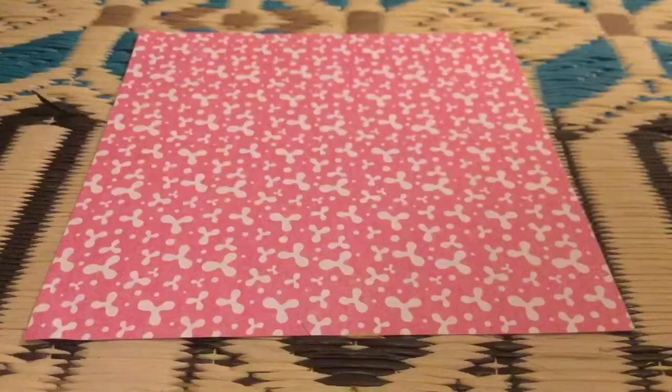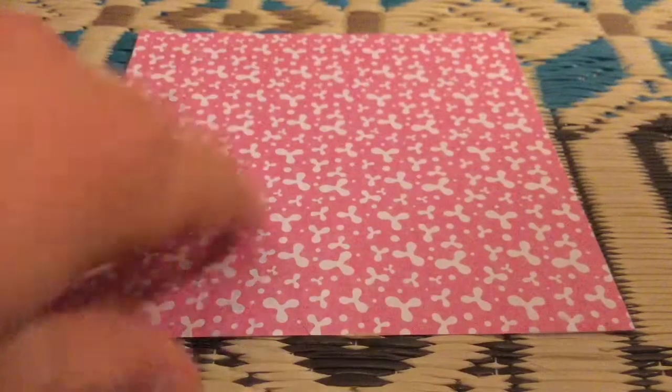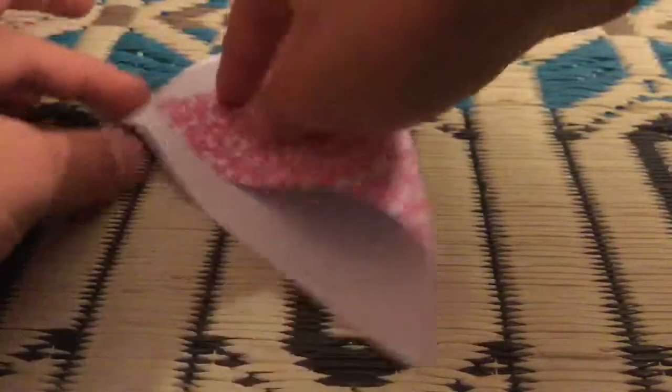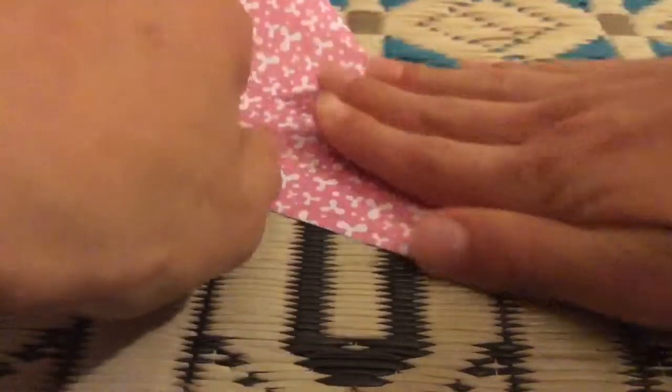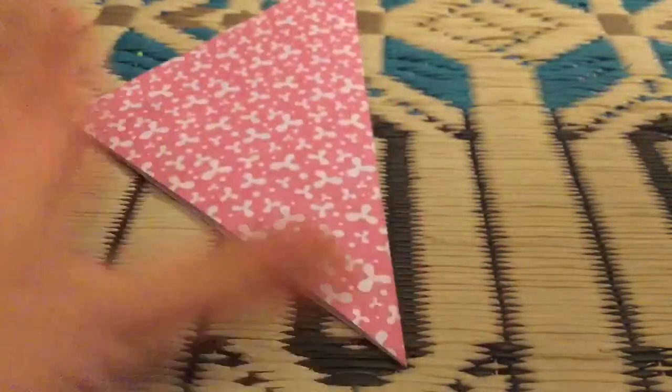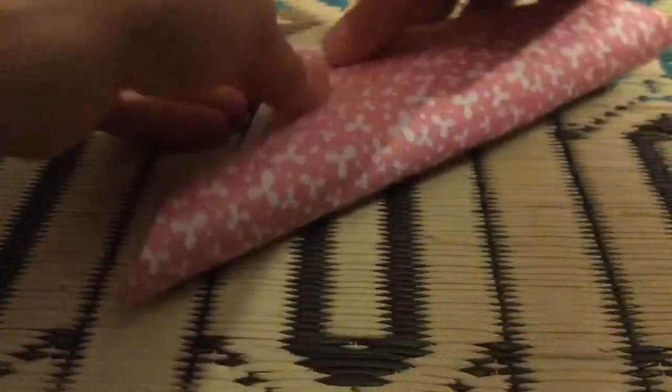To start, you're going to take a square sheet of paper, and start on the white side. Now, you fold this way, corner to corner, unfold, fold other corner to corner.